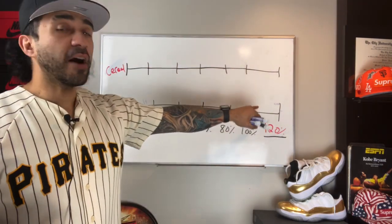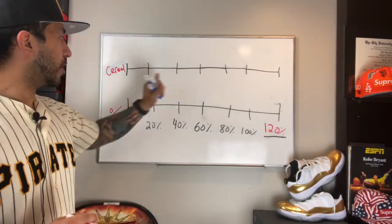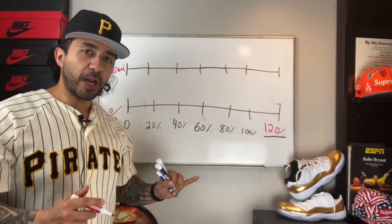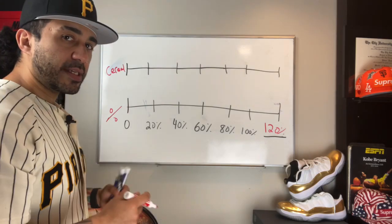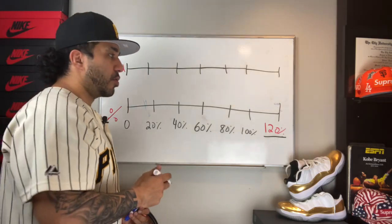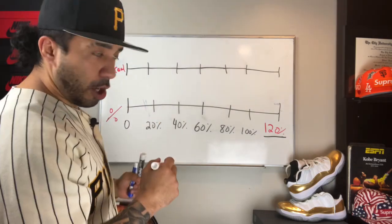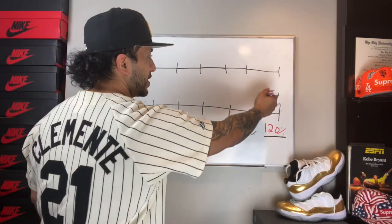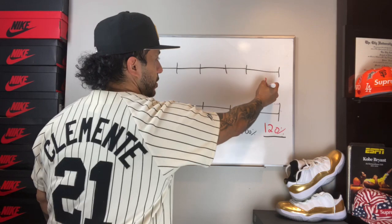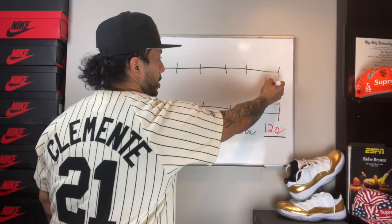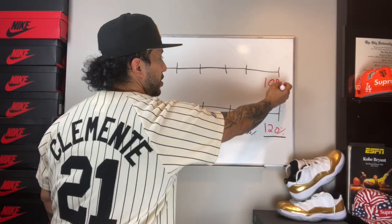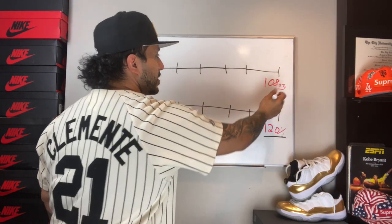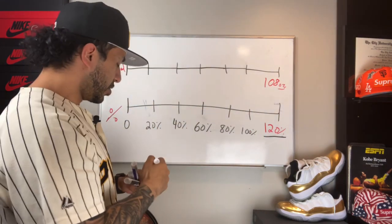Above it, I have the ounces and I left them blank. What I'm going to do is take the information I know. What I know is that 120% represents 108 ounces. You might be saying, Mr. Dona, where did you get that from?